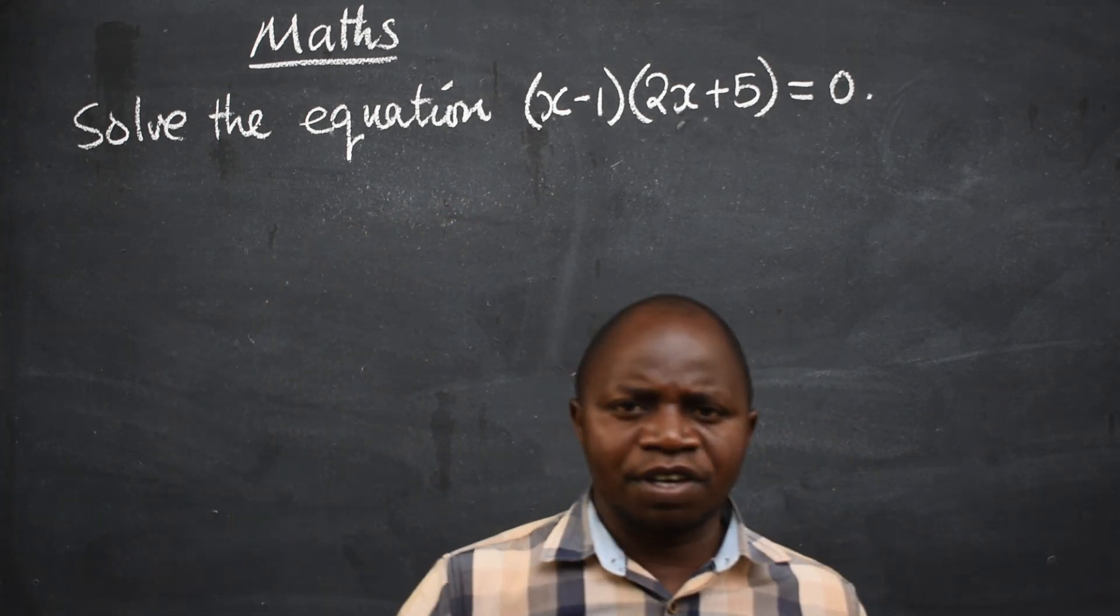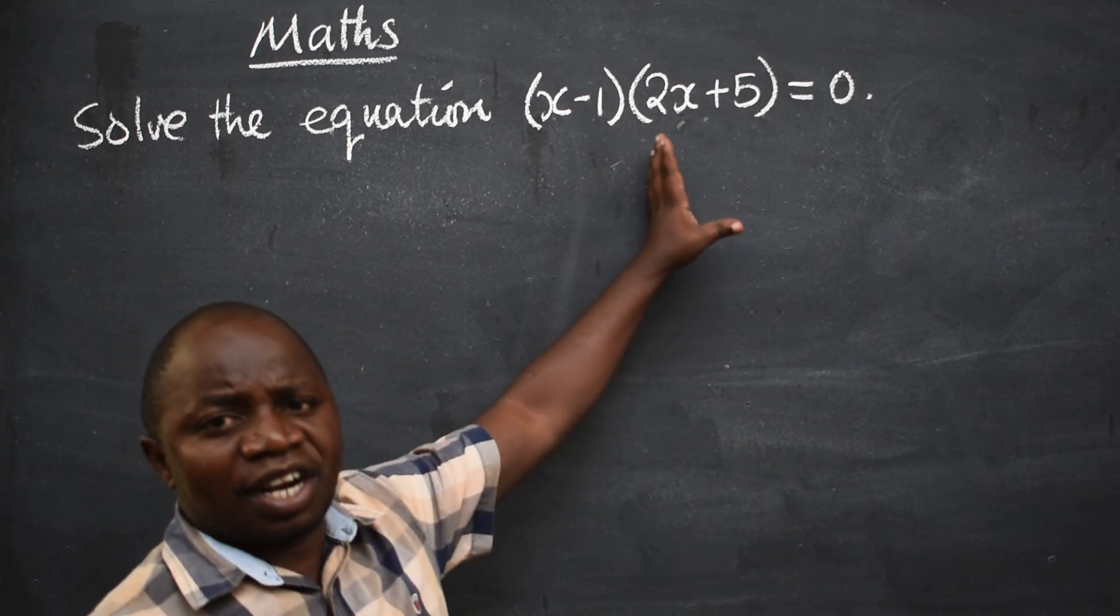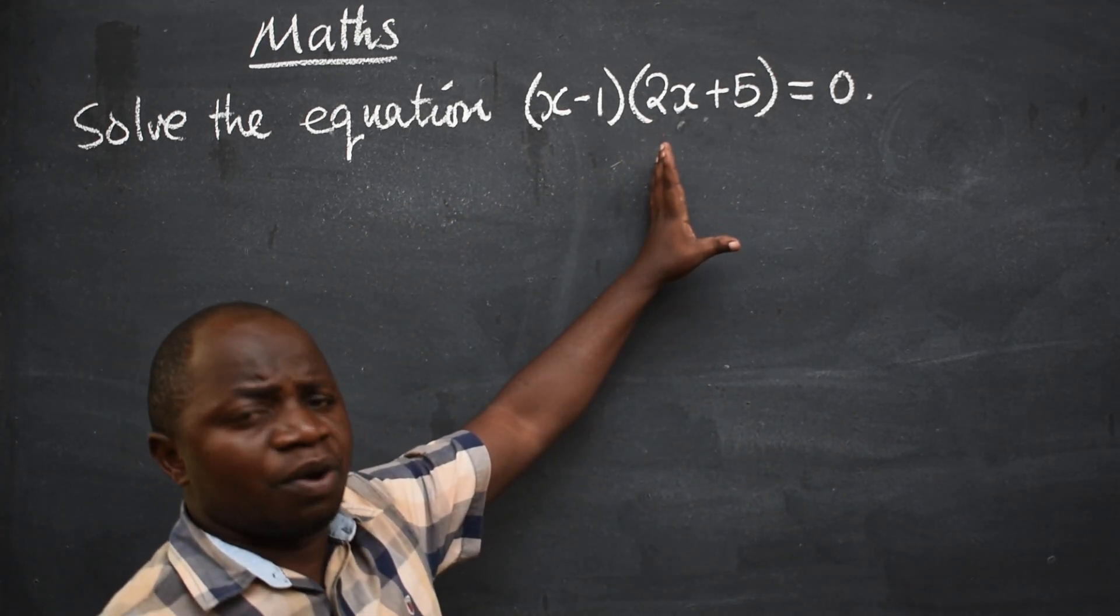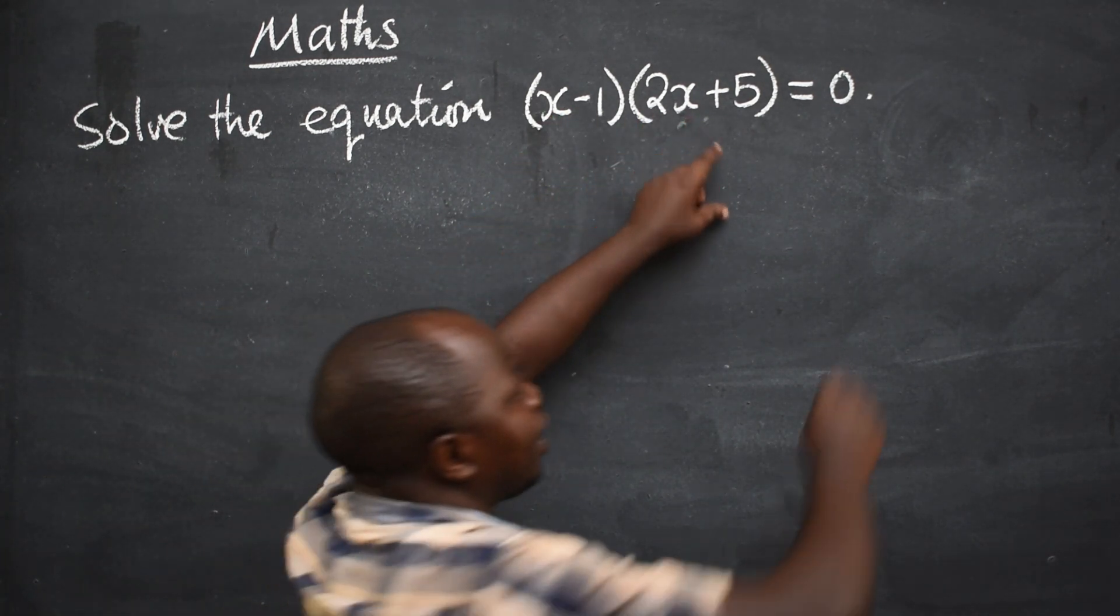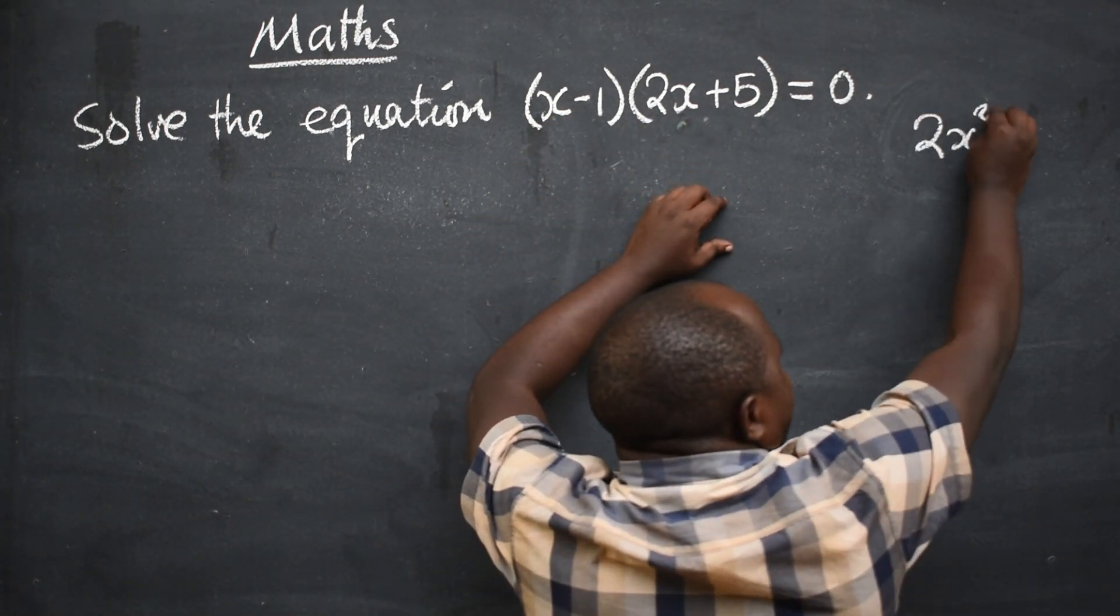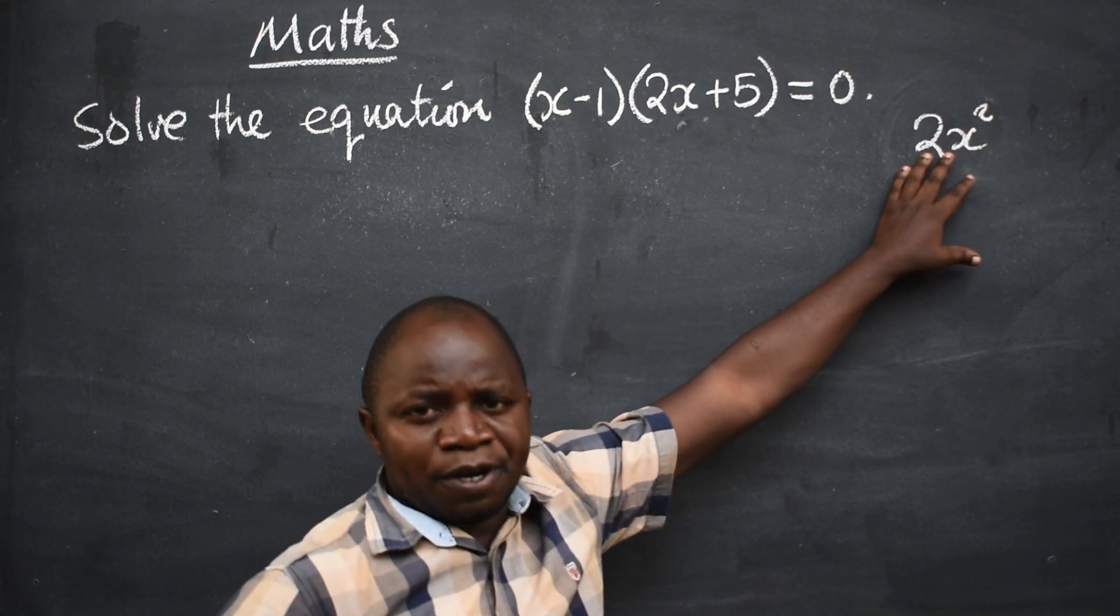How do you go about it? First of all, this is a quadratic equation. How do I know? When you multiply x times 2x, you are going to get 2x squared, meaning quadratic.